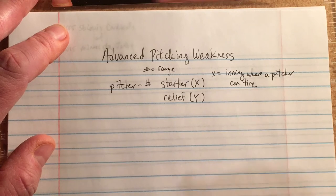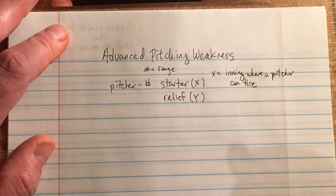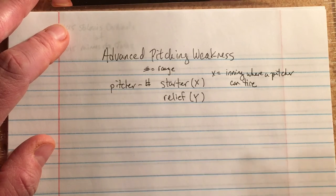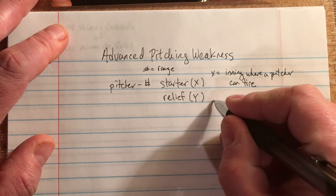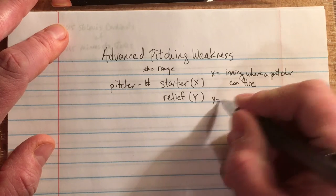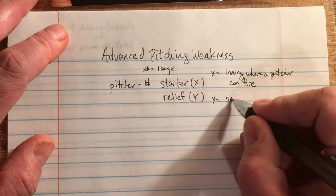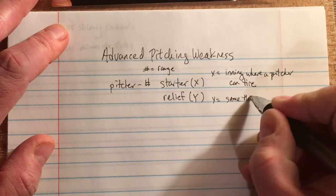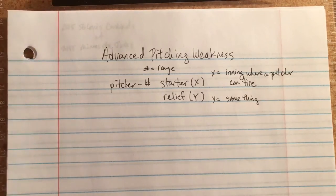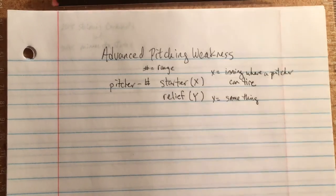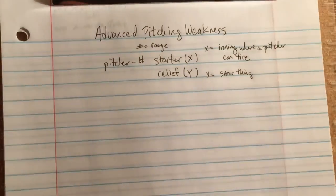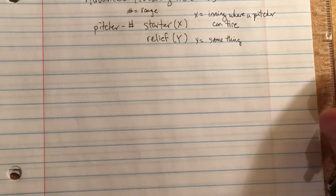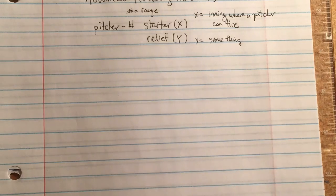So if X is five, the fifth inning is the inning where a pitcher can start to tire. Y is the same thing, just spelled out a little differently. I'll show you how to think about this to make it a little clearer.